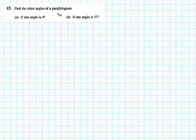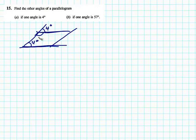It says find the other angles of a parallelogram if one angle is 4 degrees. Well, I'm not going to draw it 4 because that's a pretty tiny-looking angle, but let's just draw a parallelogram. Let's say we know one of the angles is 4 degrees. Since these top and bottom lines are parallel, this angle up here is also 4 degrees, and so this angle is 180 minus 4, or 176 degrees.